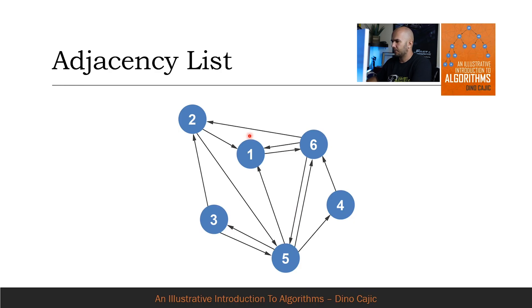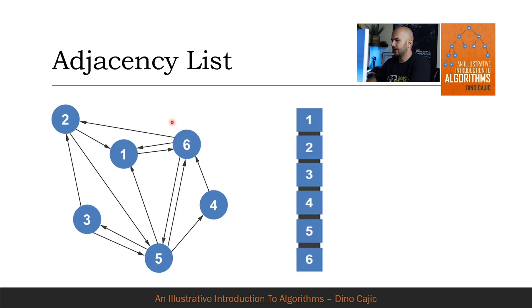Let's look at an example of how someone would create an adjacency list from a directed graph. We'll start by creating six elements in the array to represent the six nodes. Each array element will store a linked list.